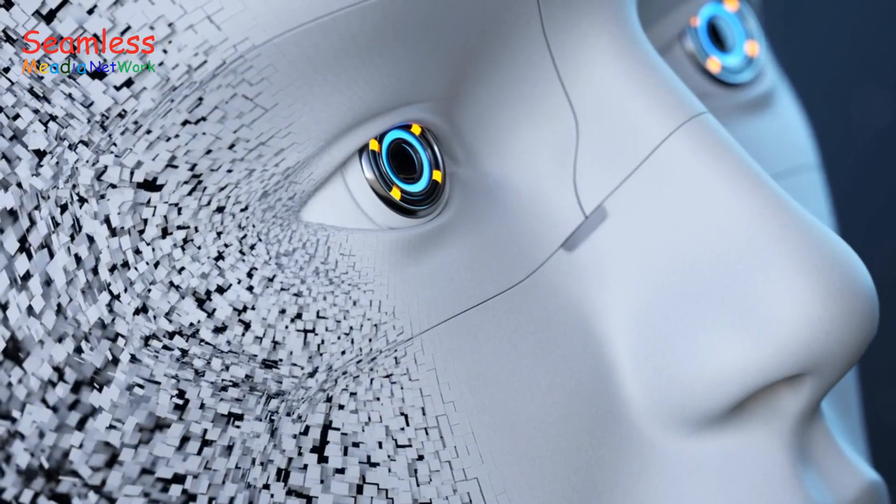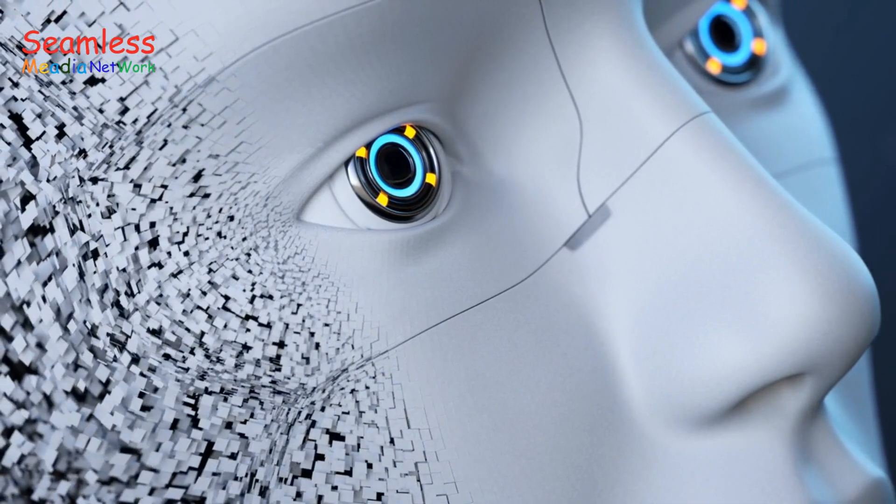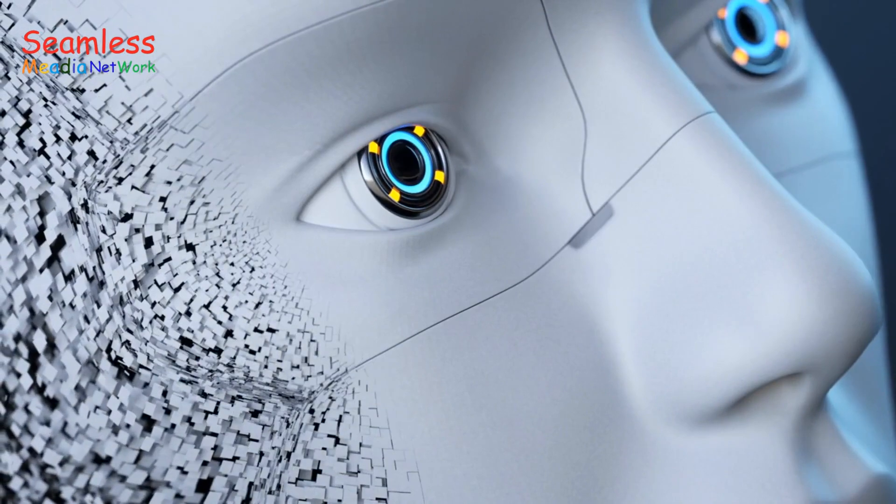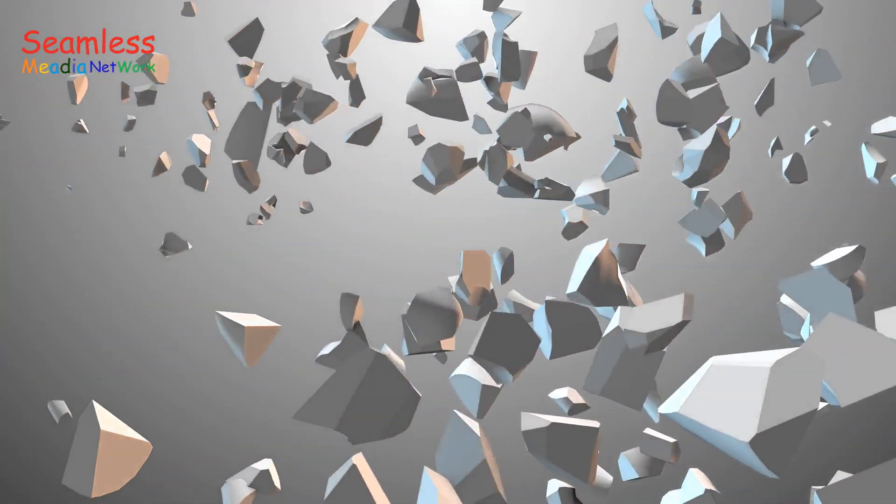At its core, AI is about creating machines that can perform tasks that would normally require human intelligence to complete. There are four main categories of AI.